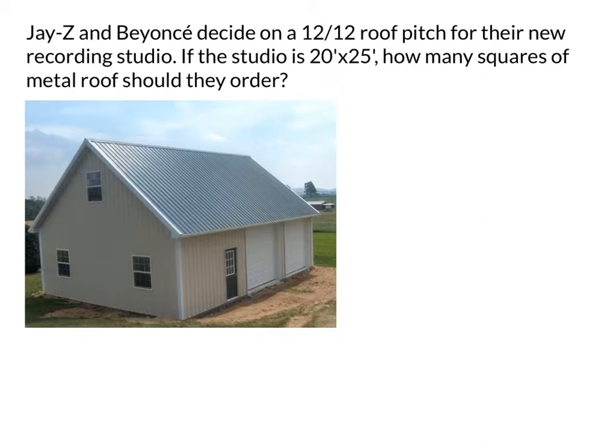All right. Let's work with these special right triangles we know and love so much now. We've got Jay-Z and Beyonce back at it with the recording studio. They have actually decided on a 12-12 roof pitch for their new recording studio, which is different than a previous problem. Now, if the studio is 20 feet by 25 feet, so they've made some more changes, how many squares of metal roofs should they order? Remember, squares means 100 square feet. So we'll have to do a little bit more math at the end, it sounds like. But let's start working this bad boy. Well, if it's 20 by 25, I'm going to jot down 20 and 25, 25.